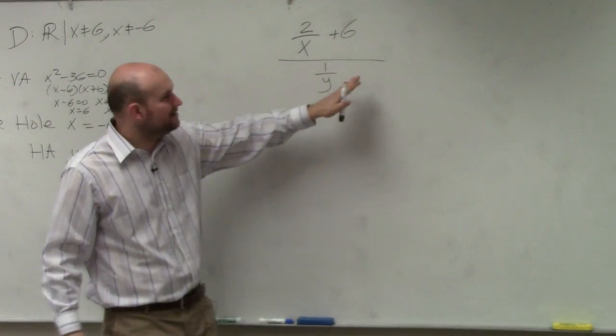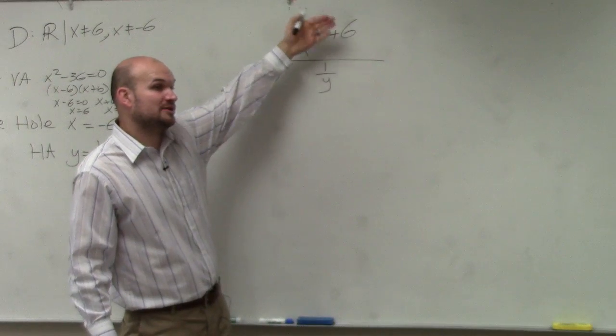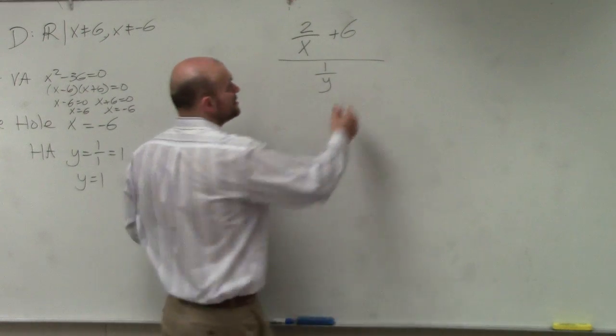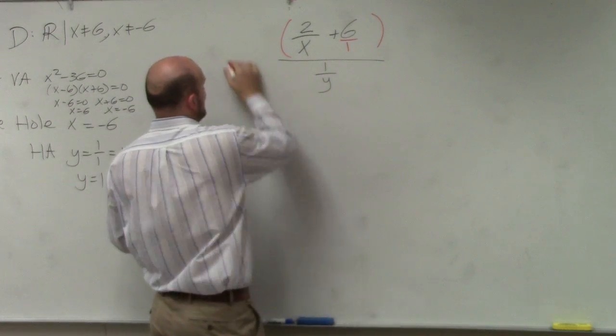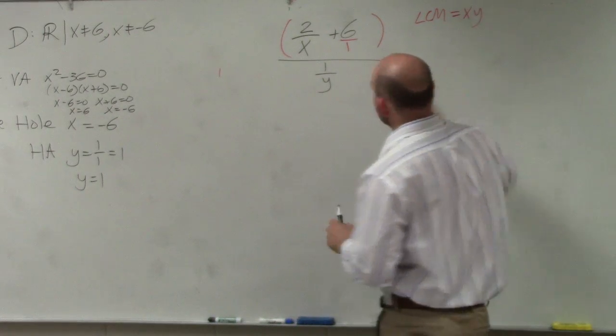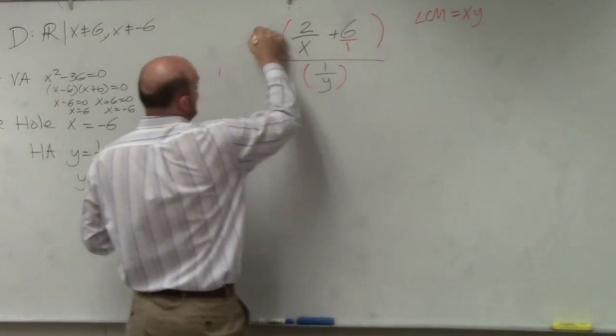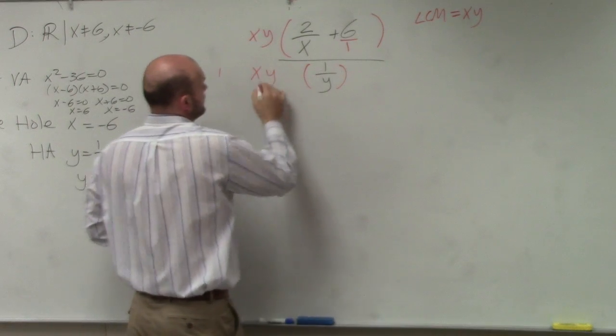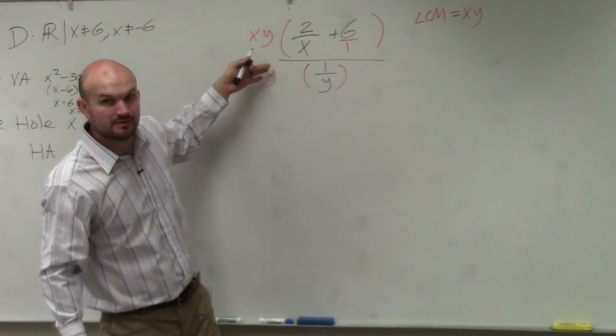But I just can't multiply this by y and this by x and get rid of it. Whatever I multiply in the numerator, I have to multiply in the denominator. So what I'm going to do is multiply by the LCM again. And the LCM, in this case, is xy. So when I multiply the top and the bottom by xy, again, am I changing the fraction by multiplying by the same term in the numerator and denominator? No.